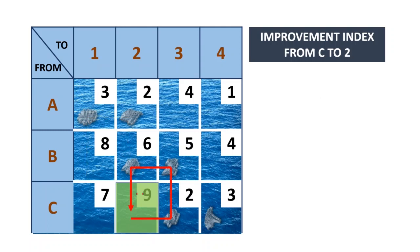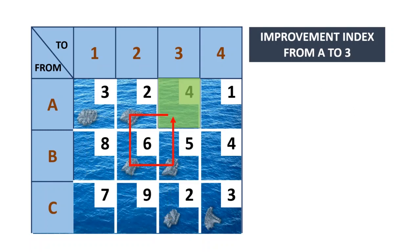For the next route, placing plus, minus, plus, minus at the corners gives an improvement index of plus 6, meaning this route is very expensive.